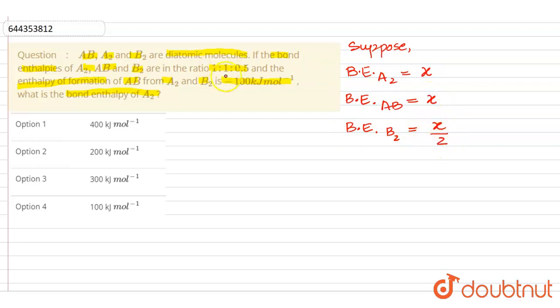Why? Because the ratio is 0.5, that means B2 is forming in ratio 0.5. If A2 is forming 1, so if bond energy of A2 we are supposing is x, then here it will come as x by 2 because it is 0.5 of A2.